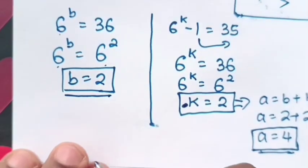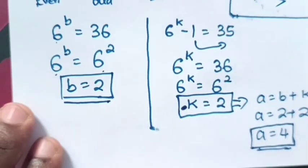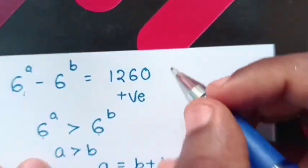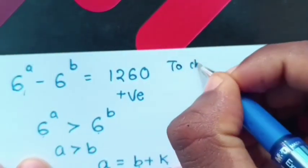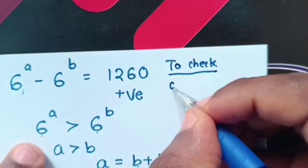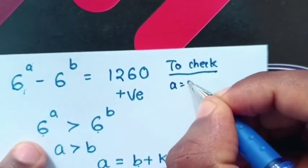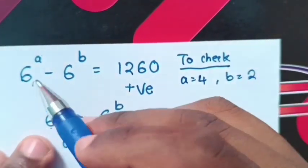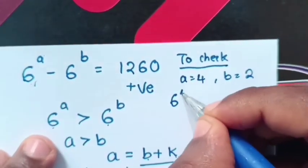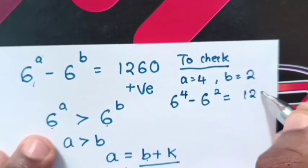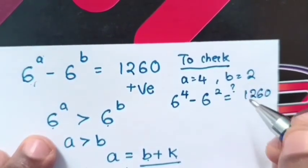Now, let's check if our answers are correct. To check from our question, where a is 4 and b is equal to 2, to substitute into our question, it will be 6 power 4 minus 6 power 2 equals to 1260.